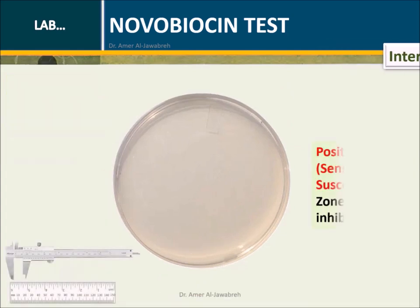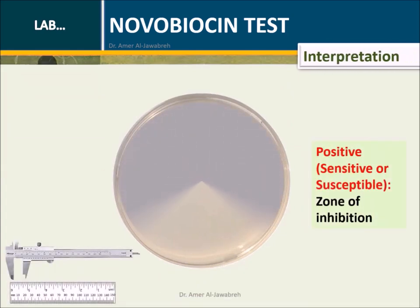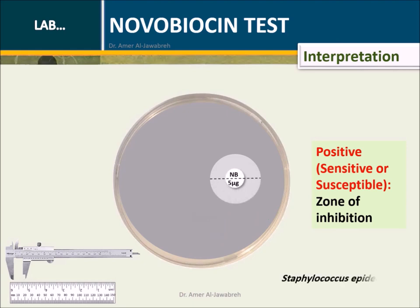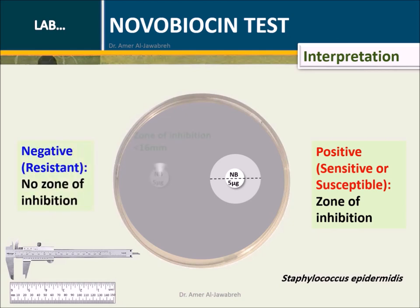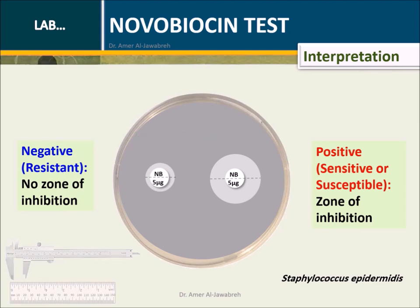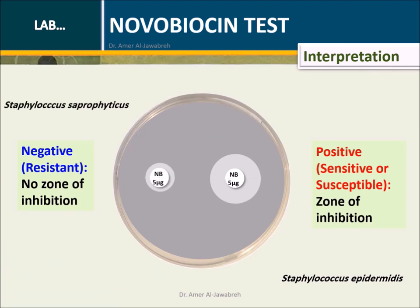Interpretation: Using a ruler or caliper, measure the zone of inhibition for both discs. A zone of inhibition greater than 16 mm is considered sensitive, and thus diagnosed as S. epidermidis. While less than 16 mm is considered resistant, and thus S. saprophyticus.